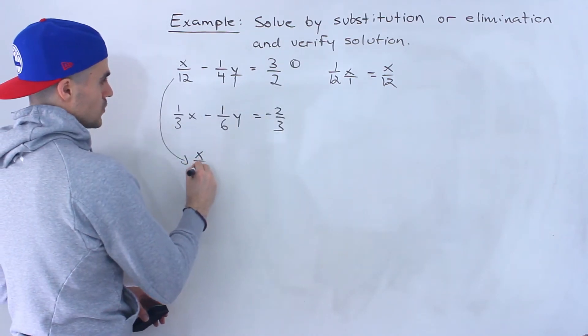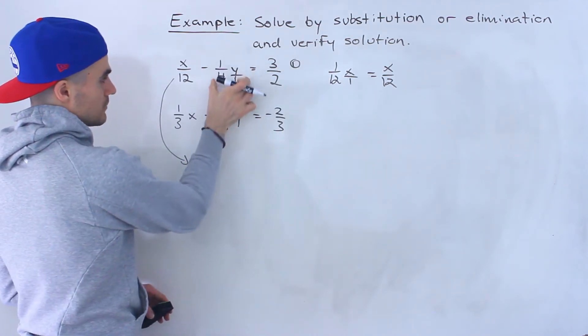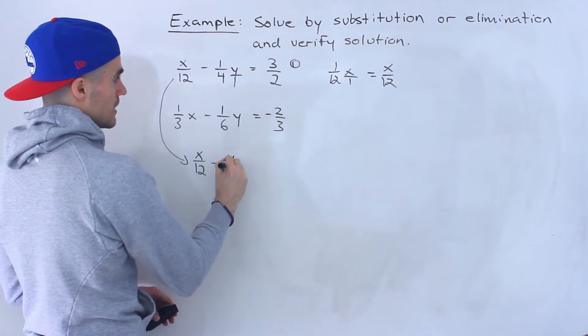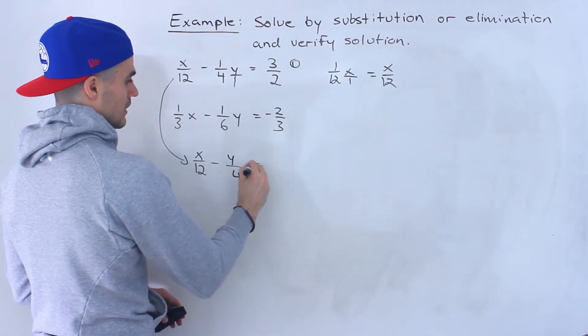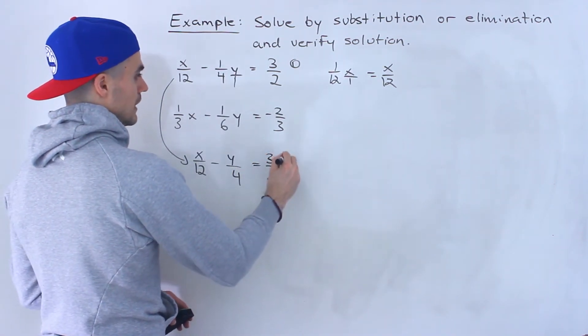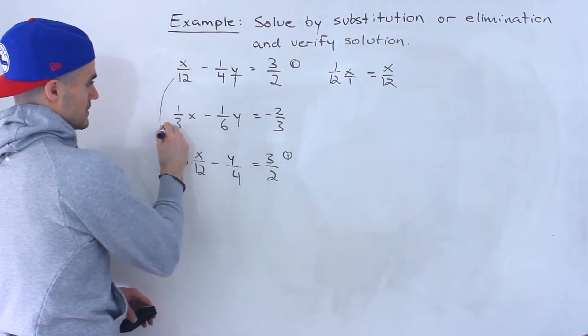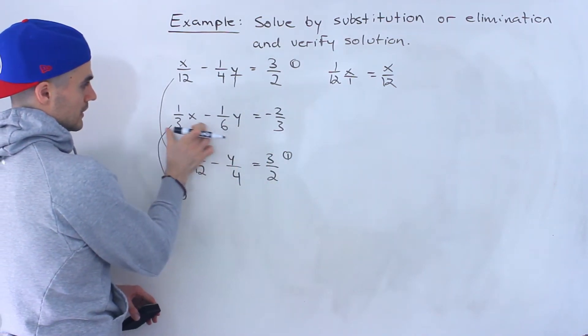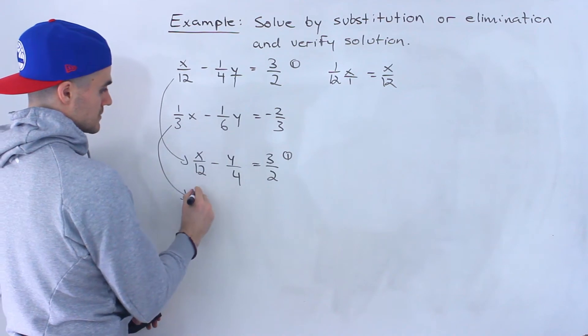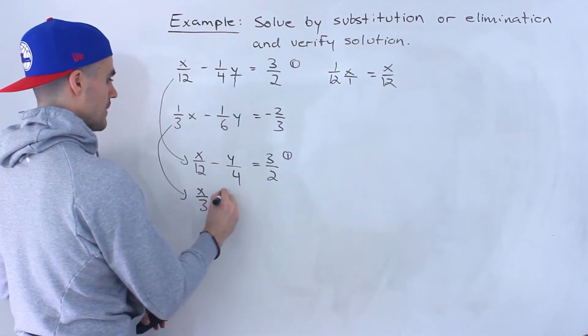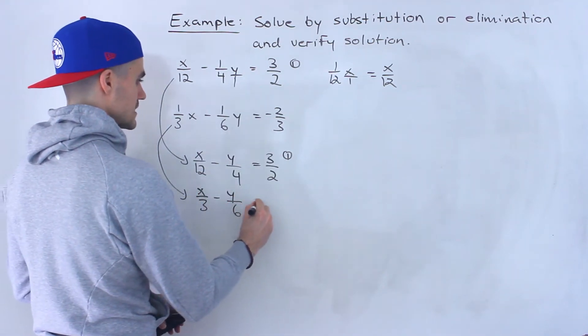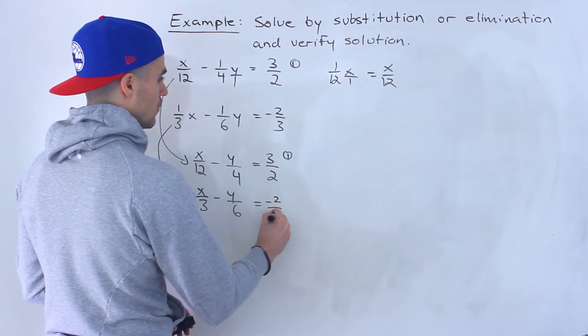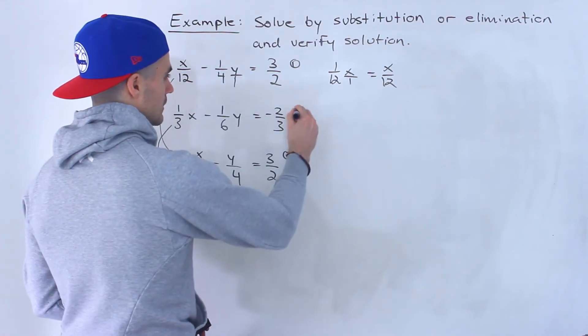So this would be x over 12 minus if we combine these two, 1 times y is y, 4 times 1 is 4. Then we got 3 over 2. That would be line 1. And then this one over here we can combine this and combine that. So this would be x over 3 minus y over 6 equals negative 2 over 3. That would be line 2.